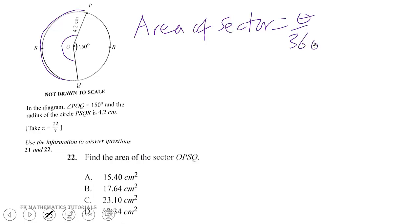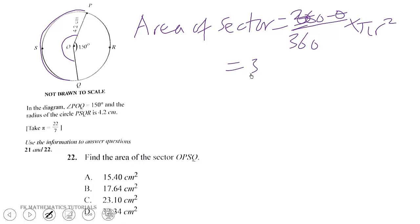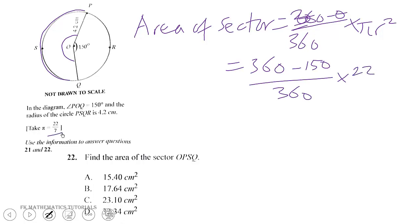Since this is the major sector, we use 360 minus theta over 360 times pi r squared. So the formula becomes 360 minus 150 over 360 times pi r squared. This time we are dealing with area.